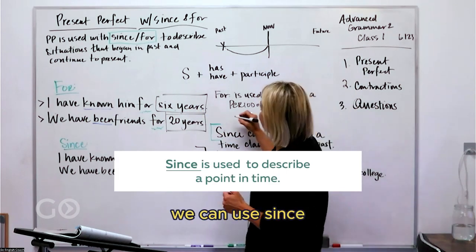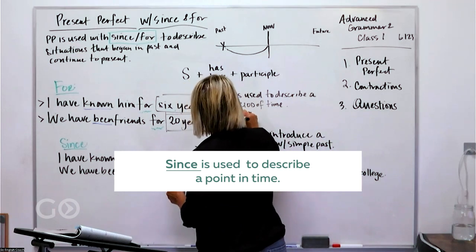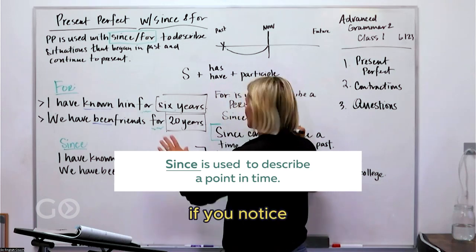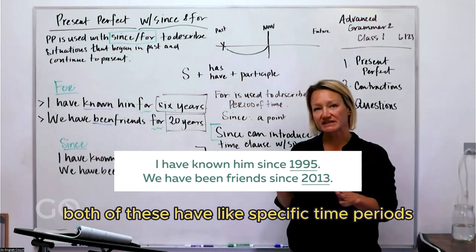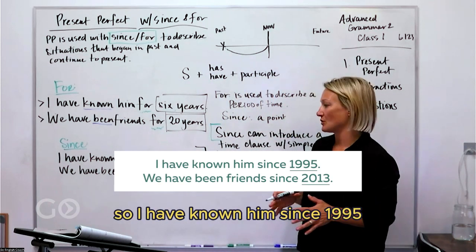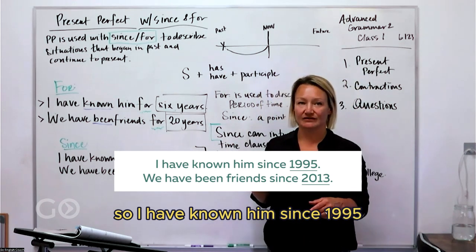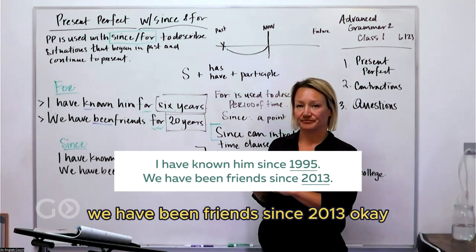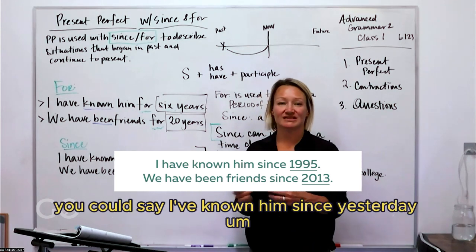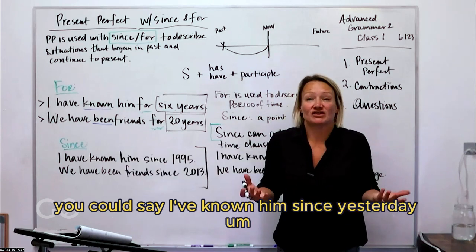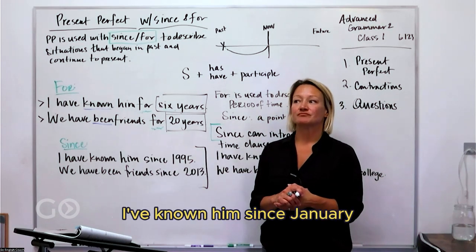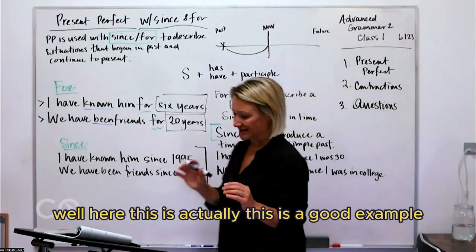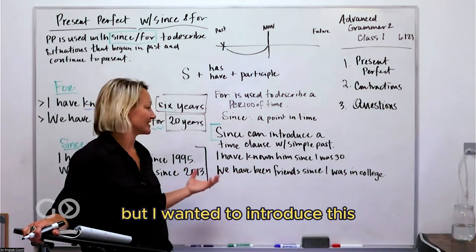We can use since to discuss a point in time. If you notice, both of these have specific time periods. I have known him since 1995, we have been friends since 2013. We could also, instead of dates, you could say I've known him since yesterday, I've known him since January. This is a good example, so this is what I wanted to say, but I wanted to introduce this.